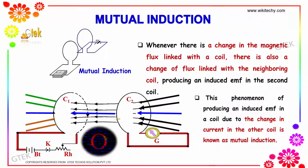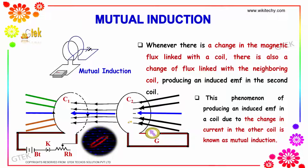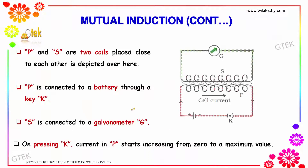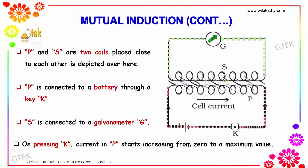This phenomenon of producing an induced EMF in a coil due to the change in current in the other coil is known as mutual induction. Consider coils P and S — two coils placed close to each other. P is connected to a battery and a key K, and S is connected to a galvanometer.